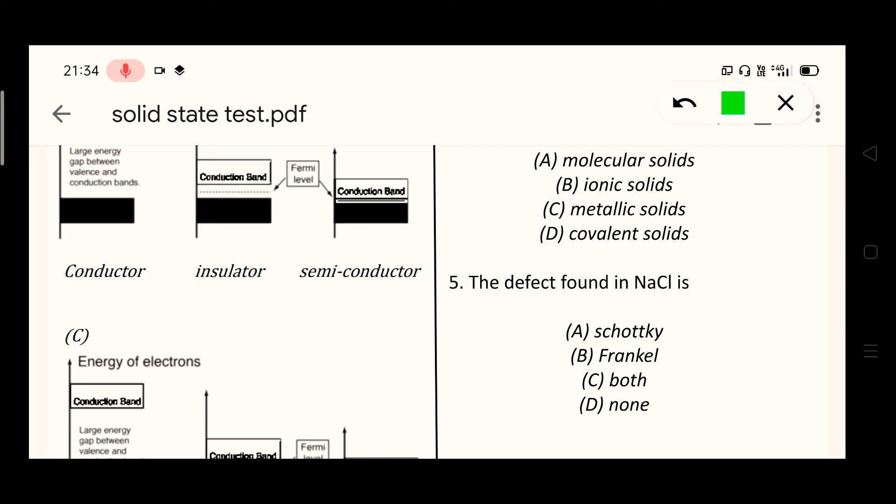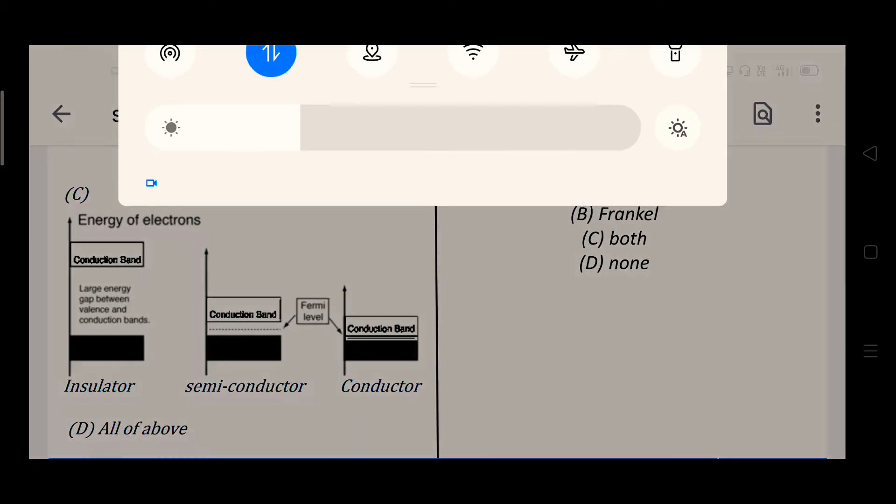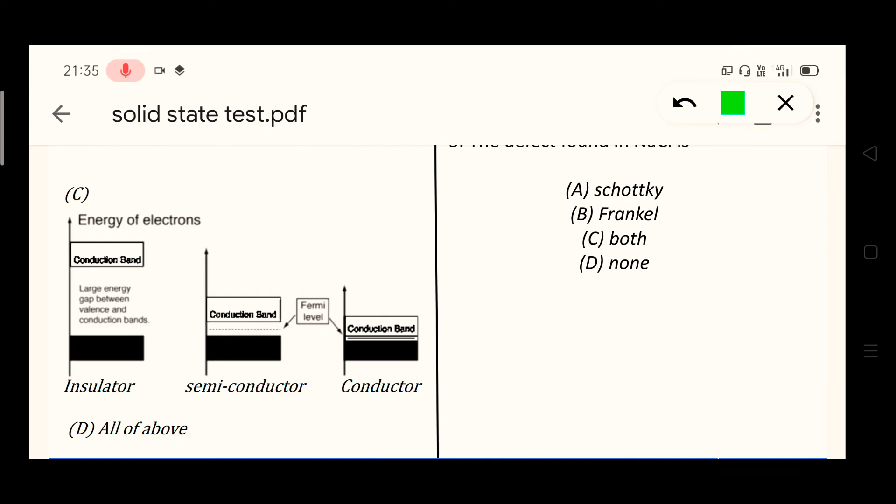C is the right answer here because in the condition of insulator there is a large gap between conduction band and valence band. Here the black color represents the valence band.